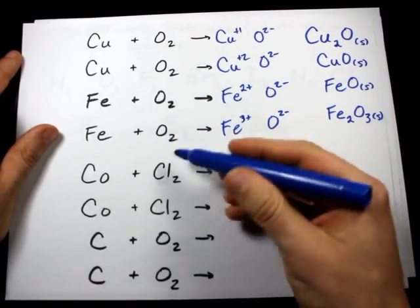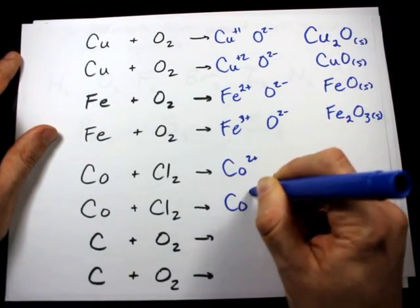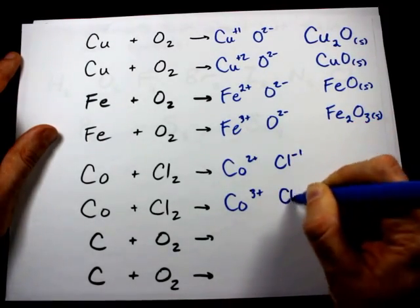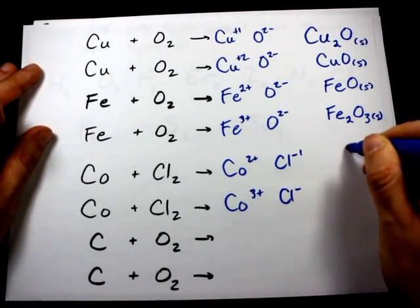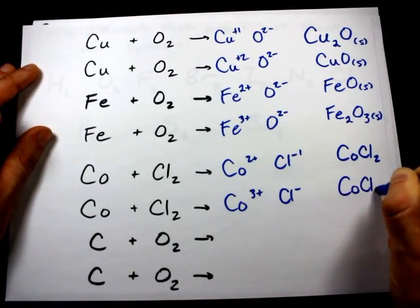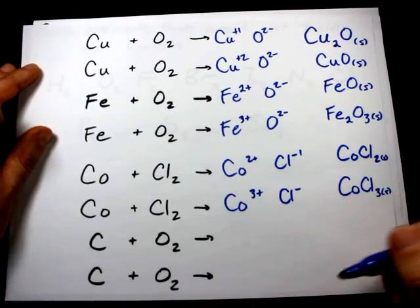I'm going to do the same thing here with chlorine. Cobalt can be plus 2 or plus 3. Again, memorized, chlorine is always minus 1, so you can end up with cobalt 2 chloride or cobalt 3 chloride, both solids because they're ionic compounds.